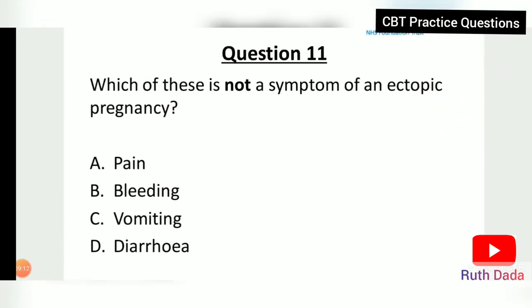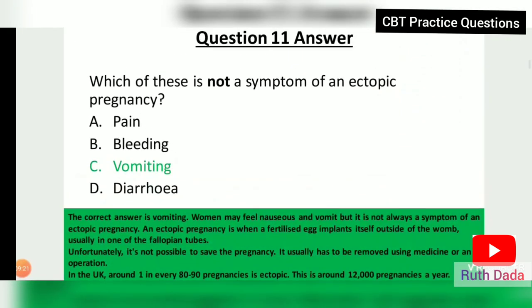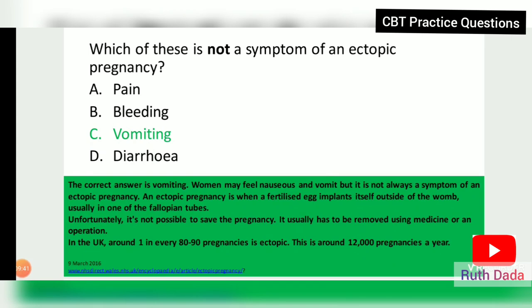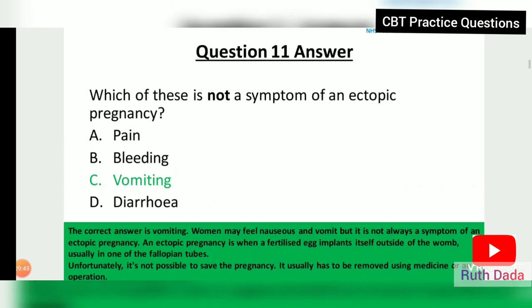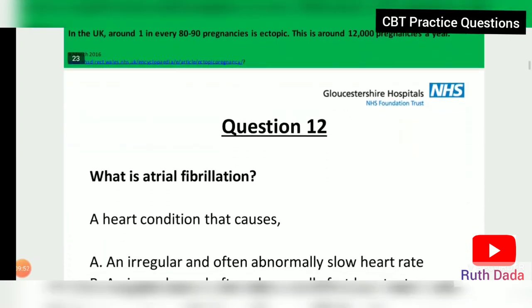Question 11: Which of the following is not a symptom of an ectopic pregnancy — pain, bleeding, vomiting, or diarrhea? The answer is vomiting. A woman may feel nauseous and vomit but it is not always a symptom. An ectopic pregnancy is when a fertilized egg implants outside of the womb, usually in one of the fallopian tubes, and it is not possible to save the pregnancy.